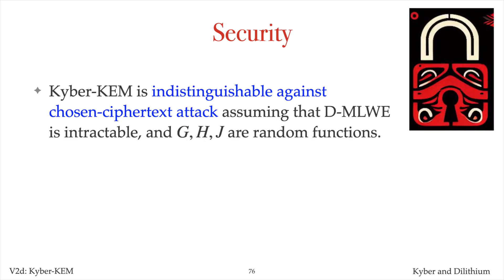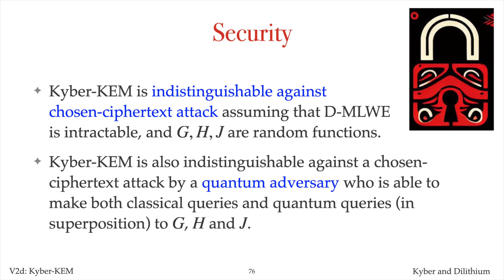Kyber KEM is indistinguishable against chosen ciphertext attacks, assuming that the decisional module learning with errors problem is intractable, and that g, h, and j are modeled as random functions. Kyber KEM is also indistinguishable against chosen ciphertext attacks by a quantum adversary who is able to make both classical queries and quantum queries in superposition to g, h, and j.